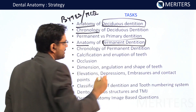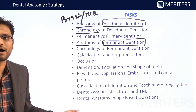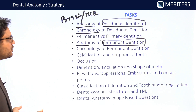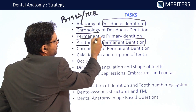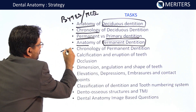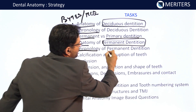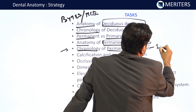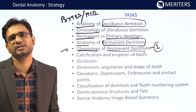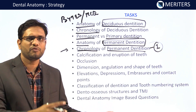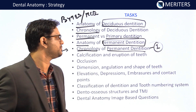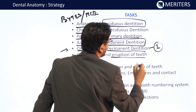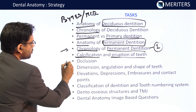Next comes the anatomy of the permanent dentition. This year, almost five to six exam questions were asked on this topic. You should also know the differences between permanent and primary dentition. Most importantly, the chronology of the permanent dentition is essential — at least one question is asked in all kinds of dental examinations, either directly or indirectly in the context of age estimation.